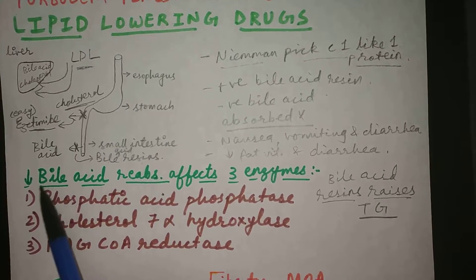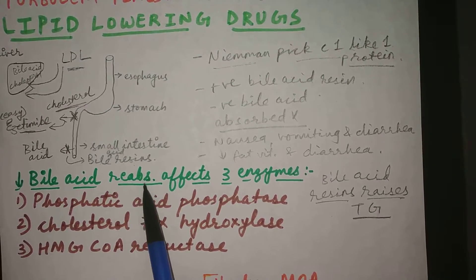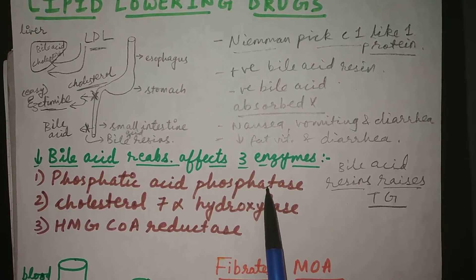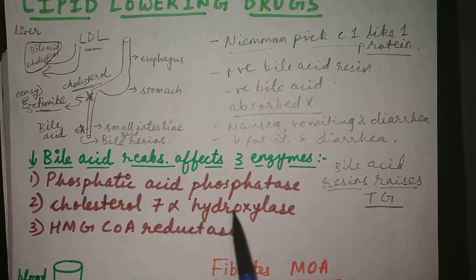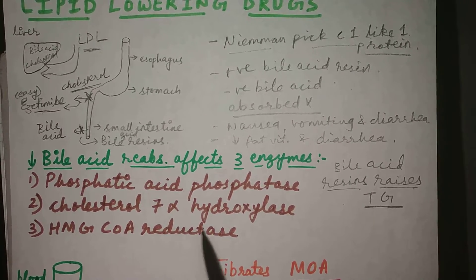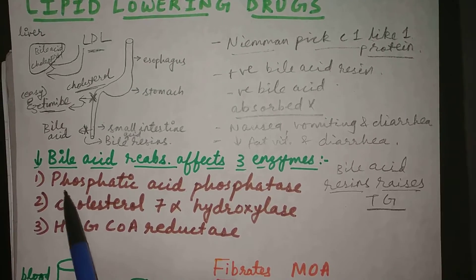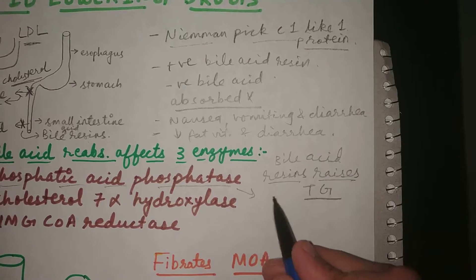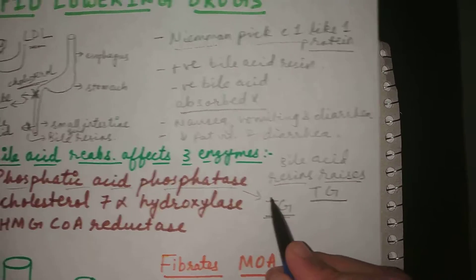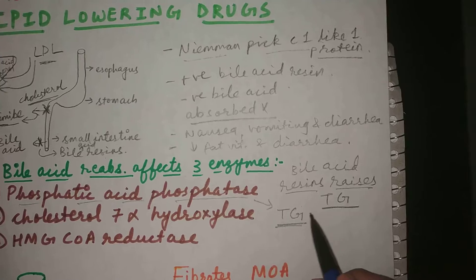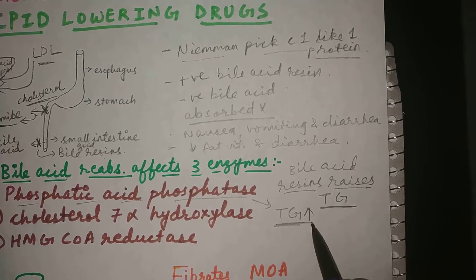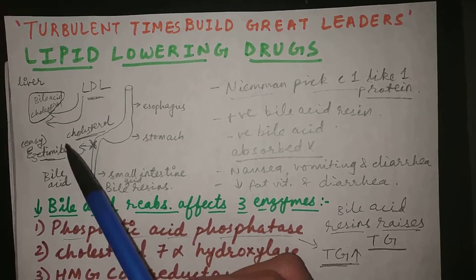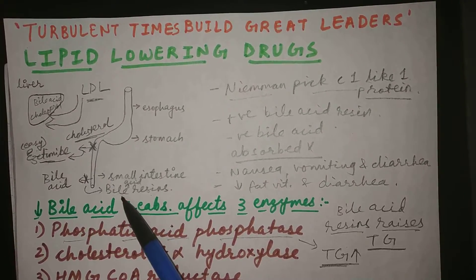Whenever there is decreased bile acid reabsorption, three enzymes are affected: phosphatidic acid phosphatase, cholesterol 7-alpha hydroxylase, and HMG-CoA reductase. Phosphatidic acid phosphatase is responsible for triglyceride synthesis, and its activation under bile acid resins results in increased triglyceride levels. That was all about ezetimibe and bile acid resins.